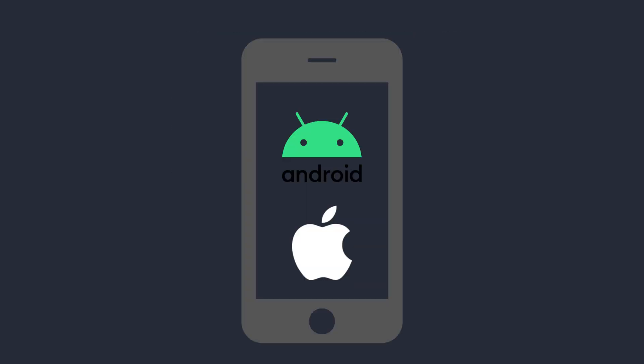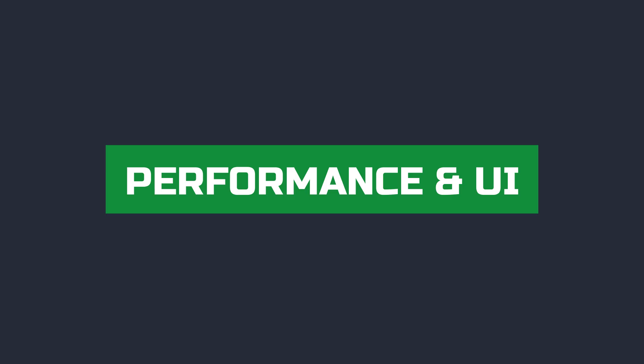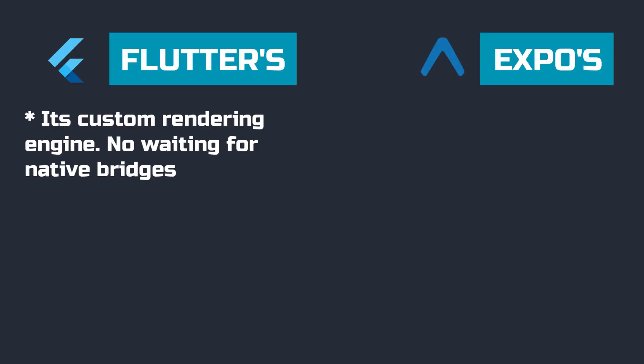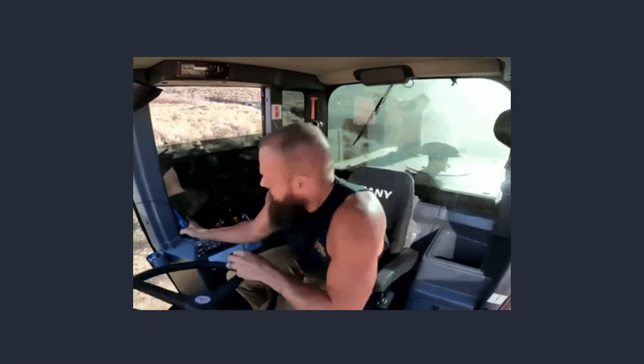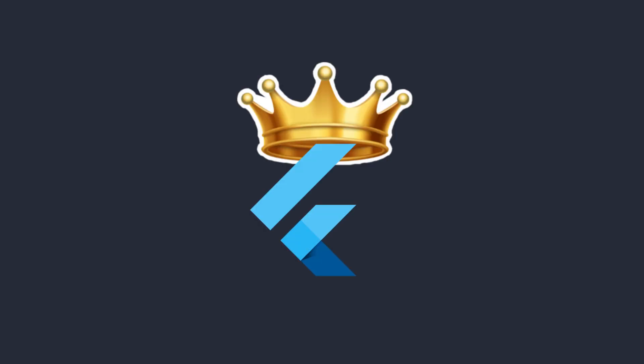Both build iOS and Android apps, but how you do it — that's where things get spicy. Performance and UI: Flutter's secret weapon is its custom rendering engine. No waiting for native bridges — it paints pixels directly, perfect for games, animations, or apps that need buttery smoothness. Expo uses a native bridge, and for most apps it's plenty fast, but heavy graphics might hit speed bumps. Though with Expo's new architecture, they're catching up. Winner: Flutter for raw power, Expo for good-enough speed with less complexity. But hey, most apps aren't Fortnite.